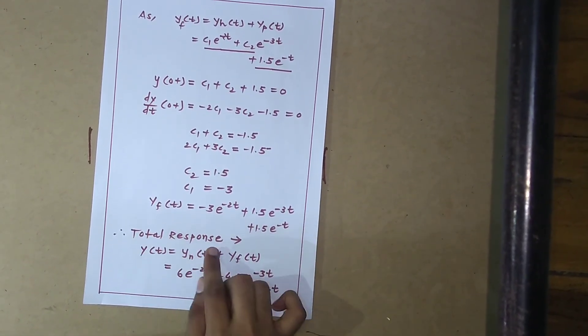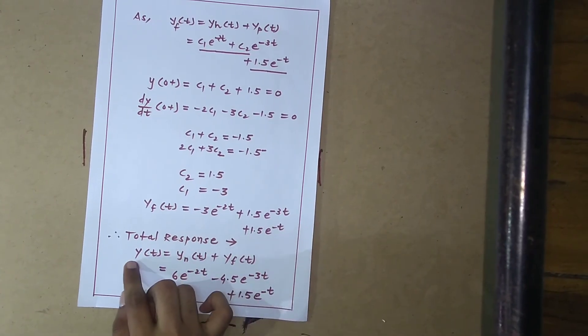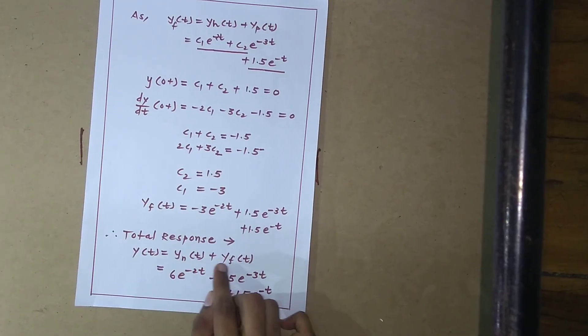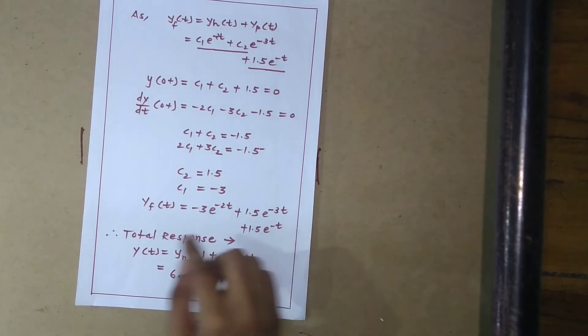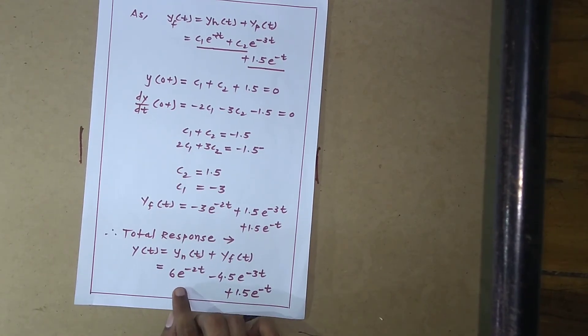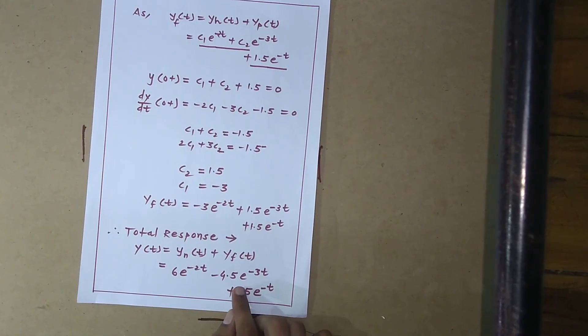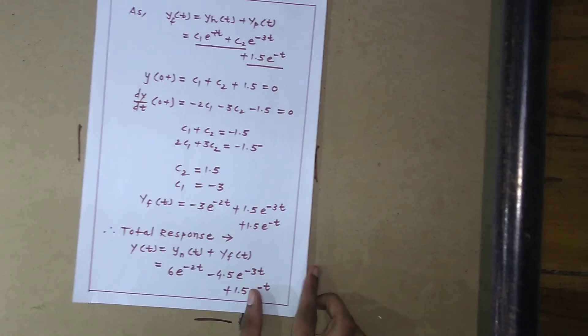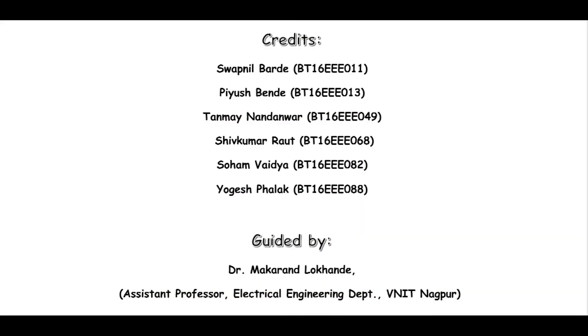Adding the natural response and the forced response gives the total response y(t) = y_n(t) + y_f(t). By addition of these two equations, the total response is 6·e^(−2t) − 4.5·e^(−3t) + 1.5·e^(−t). In this way, natural and forced response are understood. Hope this module helps you and your concepts are clear. Thank you.